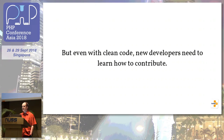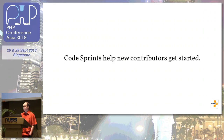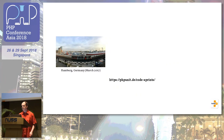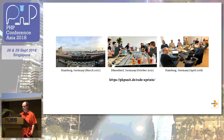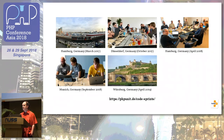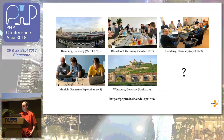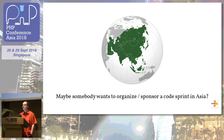That's something I started to do something about last year — I started to do code sprints. A PHPUnit code sprint is a two-day event, usually on a Friday and Saturday, where 10 to 20 people come together that want to learn how to contribute to PHPUnit. I've done it four times now: first one last year in spring in Hamburg, last fall in Düsseldorf, earlier this year in Hamburg, three weeks ago in Munich. The next one will be in Würzburg next year. I have offers from companies all around Europe — it might be in Milan, Vienna, or somewhere in Germany again. Maybe at some point we'll have a code sprint in Asia.